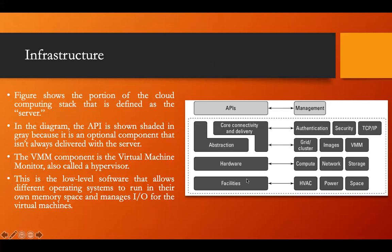At the facility level, we have HVAC — High Ventilation and Air Conditioning services — then power and spaces. These are the physical facilities that house the servers. We should have uninterrupted power supply, ventilation and AC services, and adequate space. This layer describes the physical server environment.